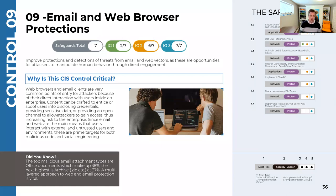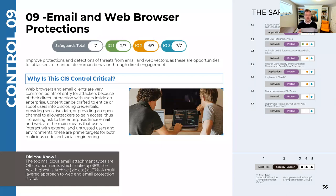Implementing DMARC is a specific policy or configuration on your domain designed to help reduce the chances of spoofing. It also improves the trust relationship that your domain has with the rest of the world — making it harder for people to pretend to be you and improving the deliverability of your emails.